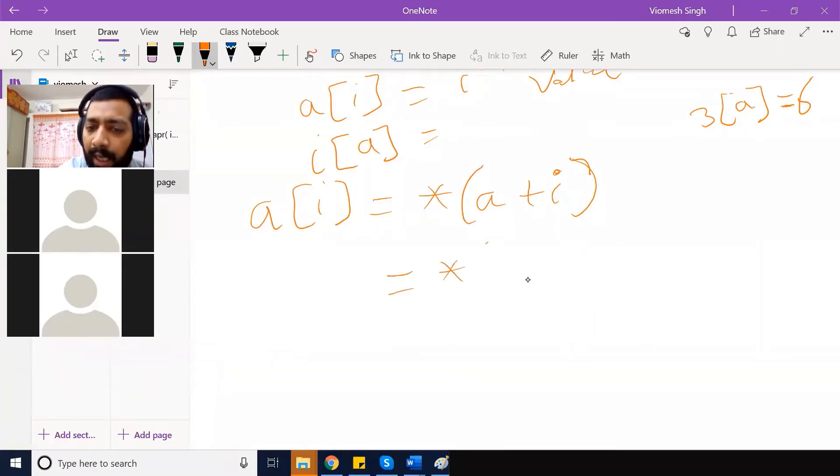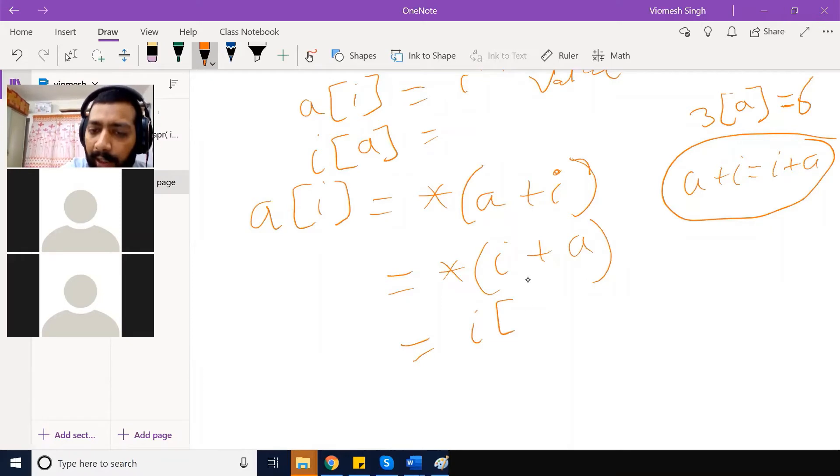Now, in the math we have seen, either we can write a plus i or we can write i plus a. It is same. a plus i equal to i plus a. Are they same or not? Same. That means we can write i plus a. A plus i, we have written i plus a. In the same way, we can write it like i of a. So, a of i equal to i of a.